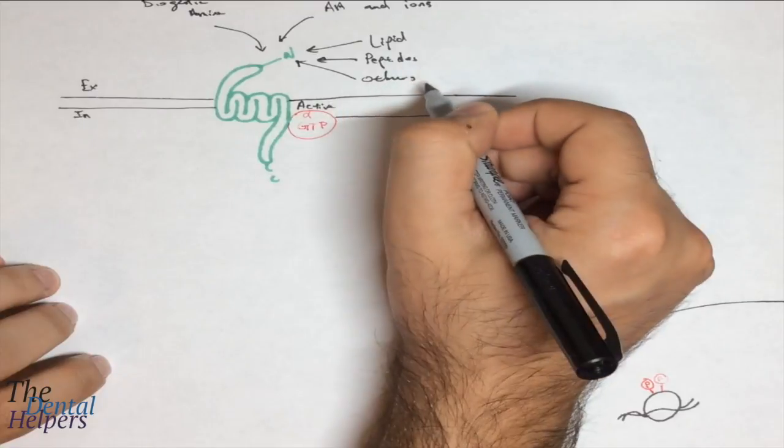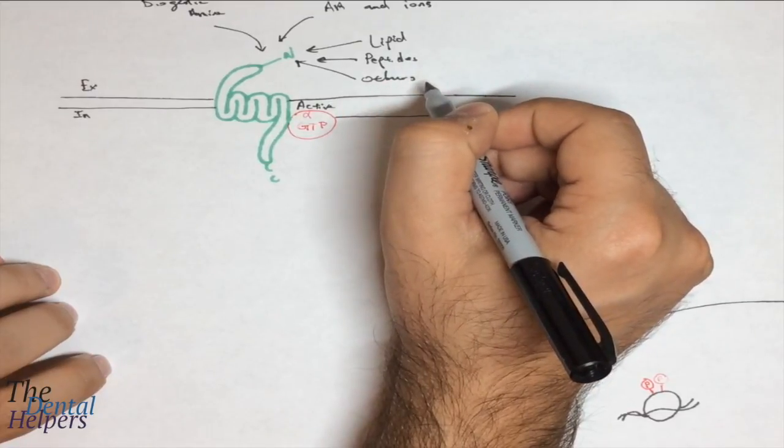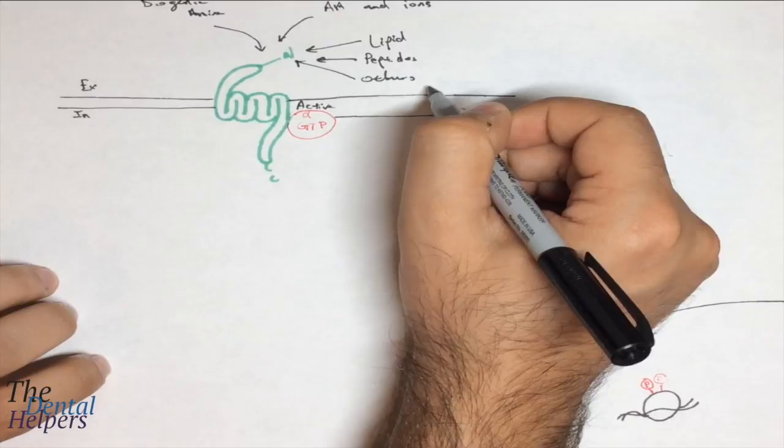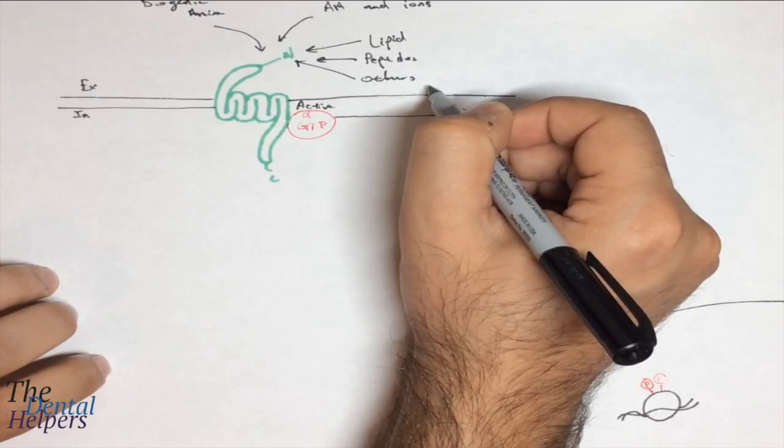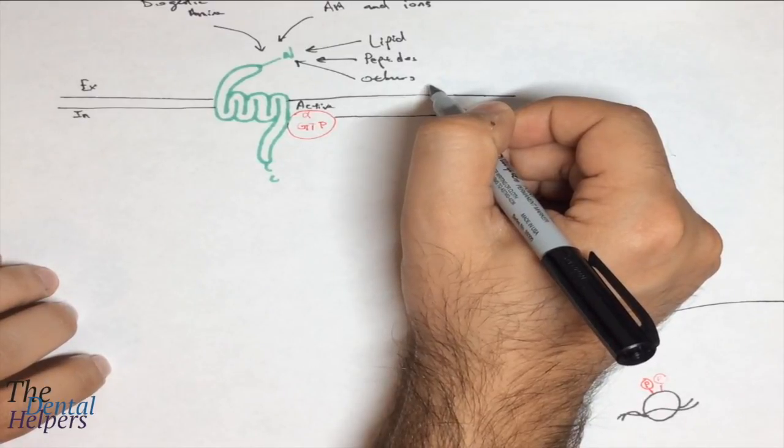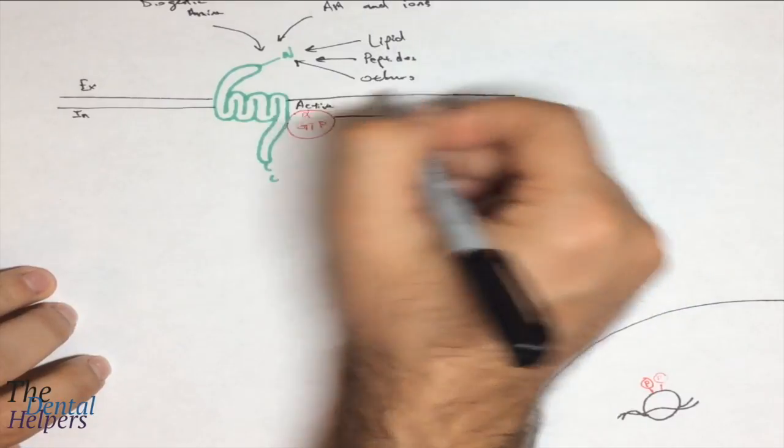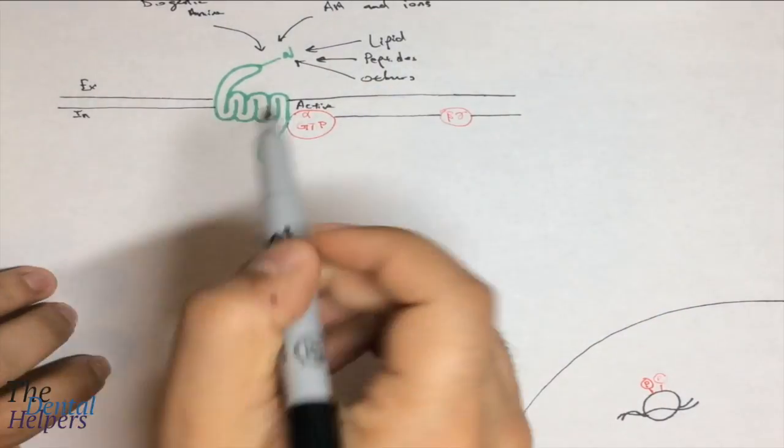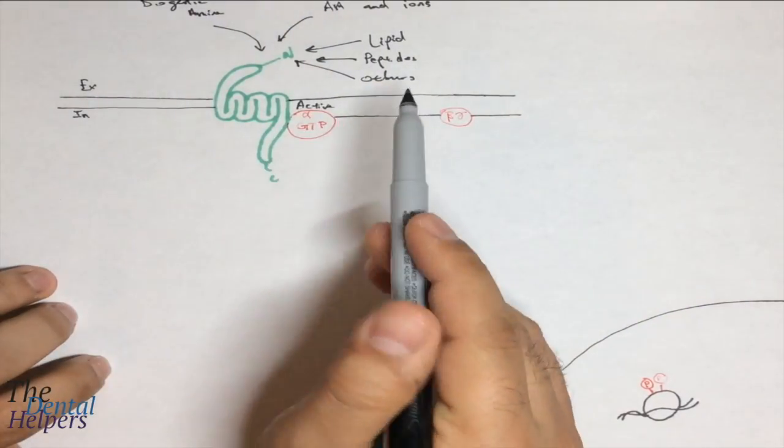Some examples in the other group include light, odorants, pheromones, nucleotides, cannabinoids, and endorphins. So there are a lot of different things that can bind to the N-terminus to activate the GPCR.